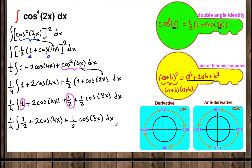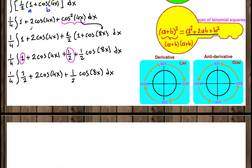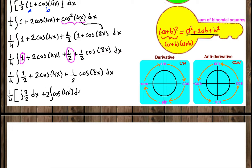Now we can separate the integrals and integrate each piece one by one. We have one fourth in front of: the integral of three over 2 dx, plus 2 times the integral of cosine of 4x dx — we can pull the 2 in front — plus one half in front of the integral of cosine of 8x dx.